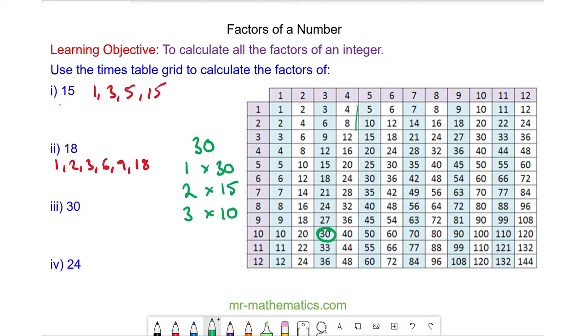30 does not appear in the 4 times tables but you can see in the 5 times tables it is 5 times 6. And because there are no numbers between 5 and 6 we know we've covered all the factors.